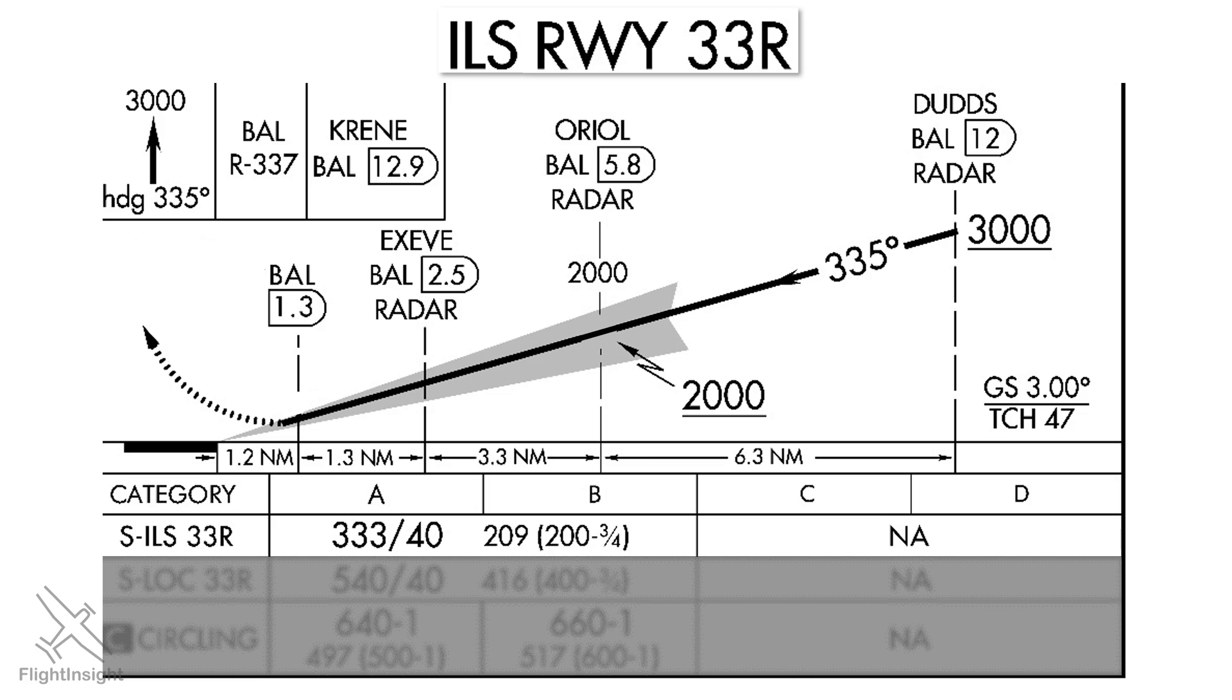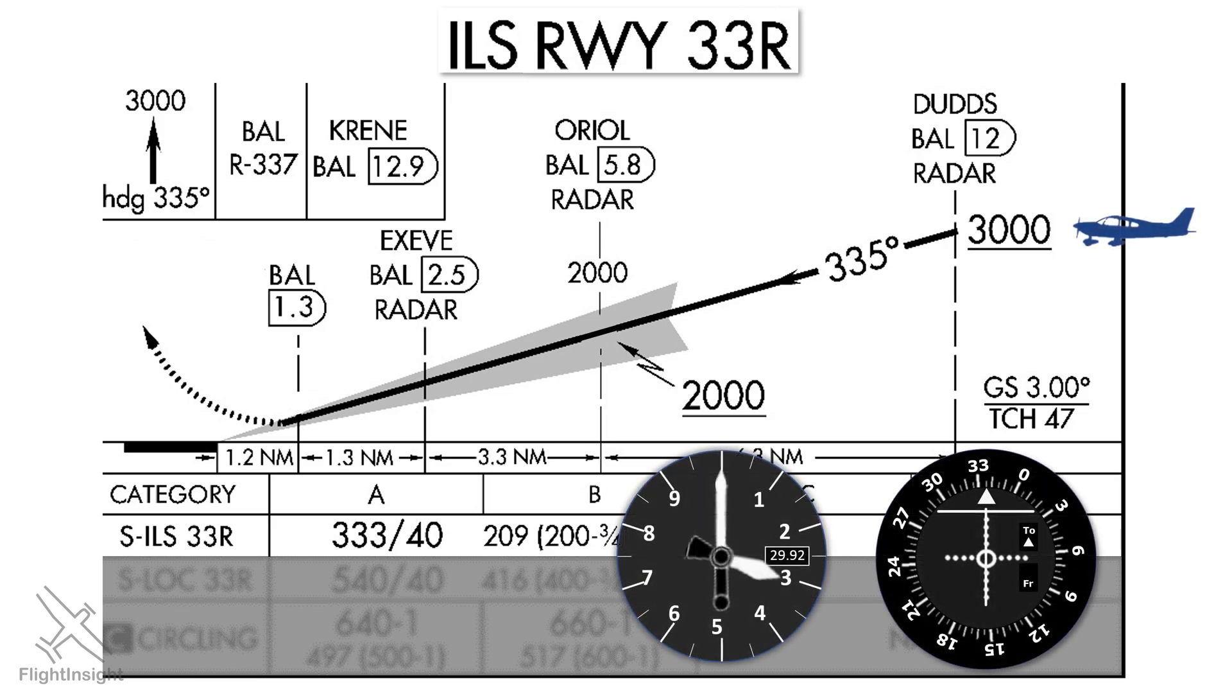An ILS is flown by starting at an assigned altitude, let's say in this case 3,000 feet, and intercepting the glide slope from below. So when we start, these are the instrument indications with the glide slope needle above center. As we approach DUDDS, the needle starts to fall towards center, indicating that we can descend along the glide slope. We'll keep both the glide slope and localizer needle centered throughout the descent as we get closer to the runway.